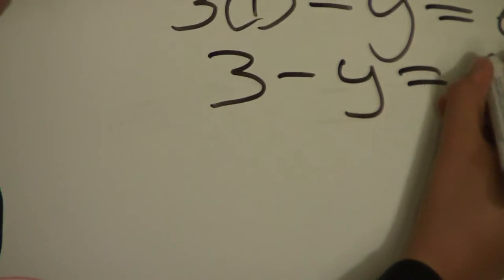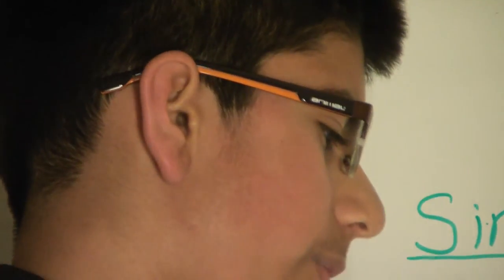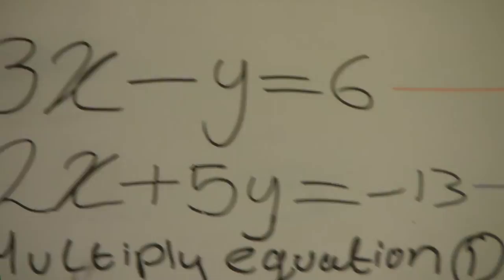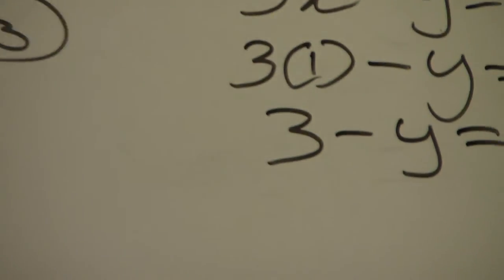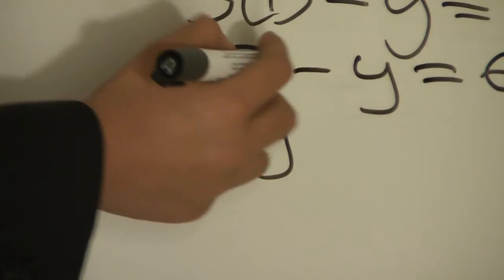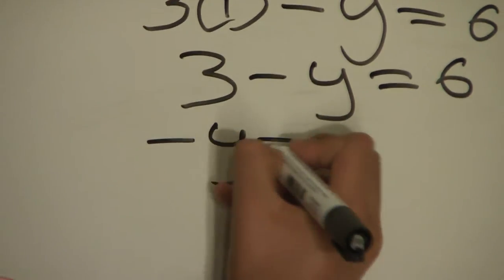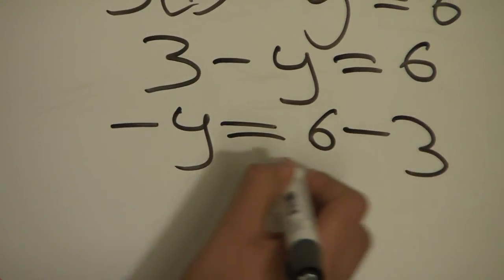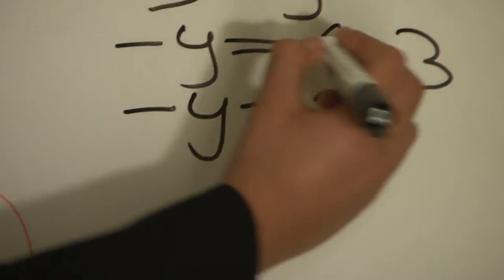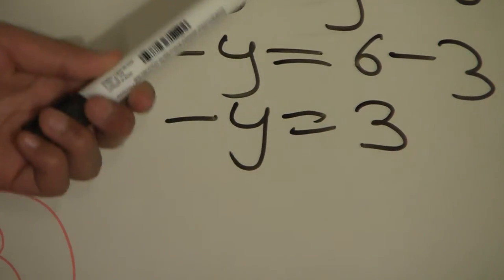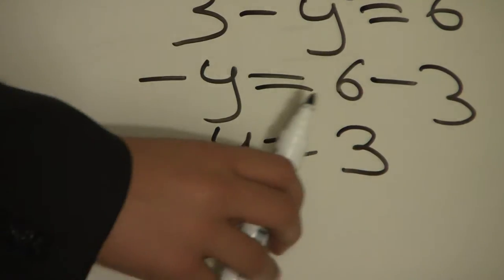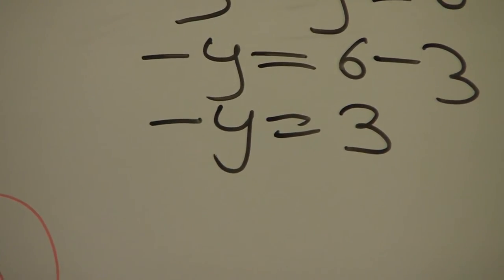3 minus y equals 16. We have to move the 3 onto the other side of the equals, so that will be written as 16 minus 3. It becomes a minus because on the other side it is a positive, so when we move it onto the other side it will become a negative. So minus y equals 16 minus 3, which equals 3.